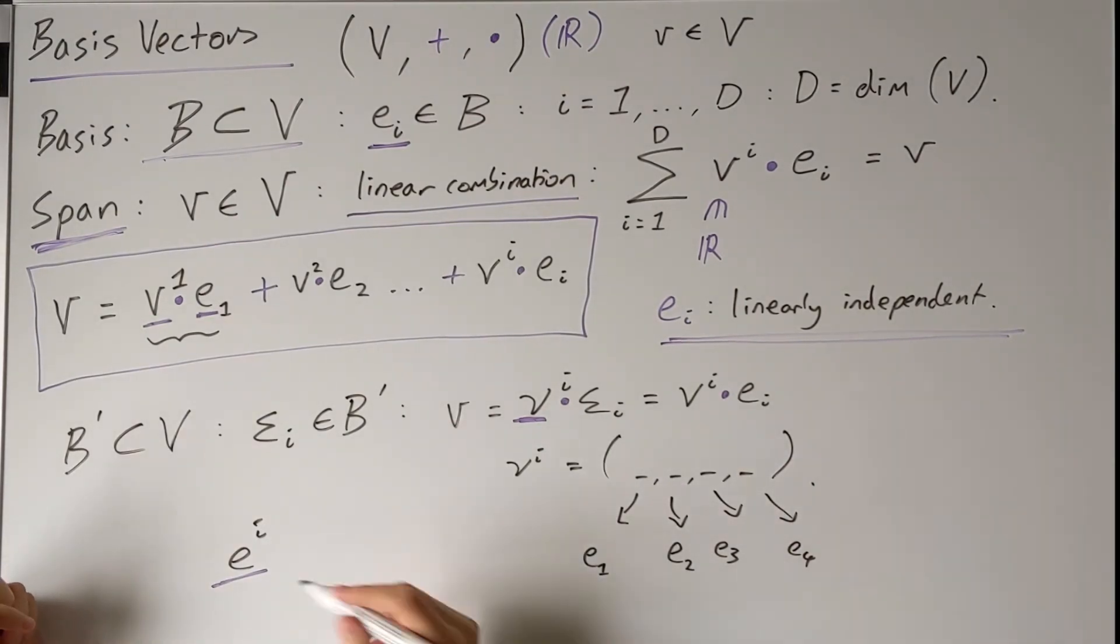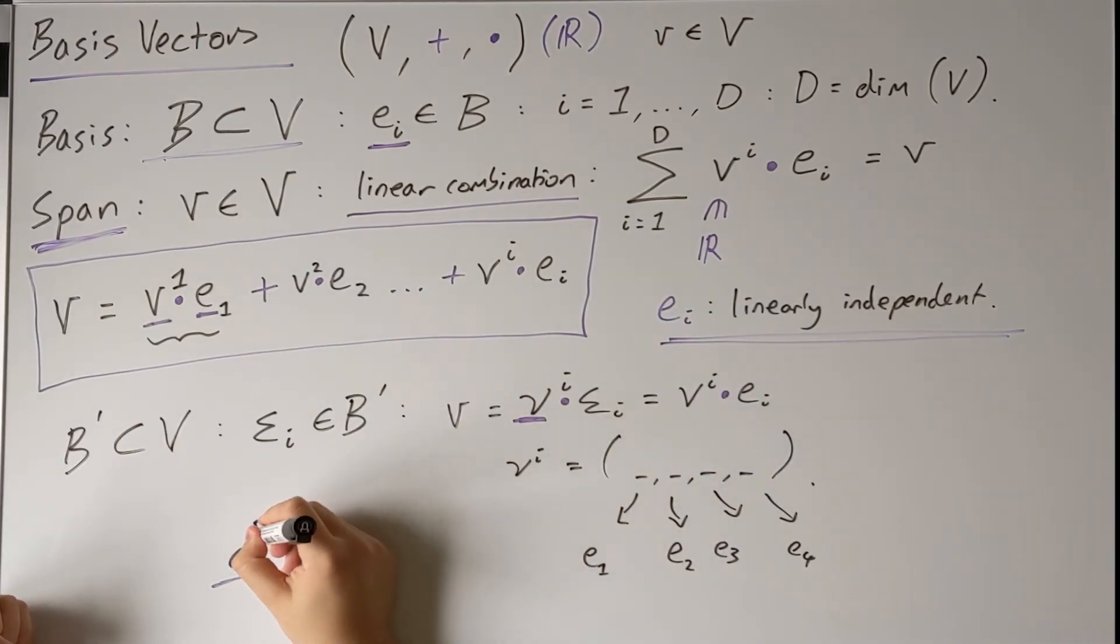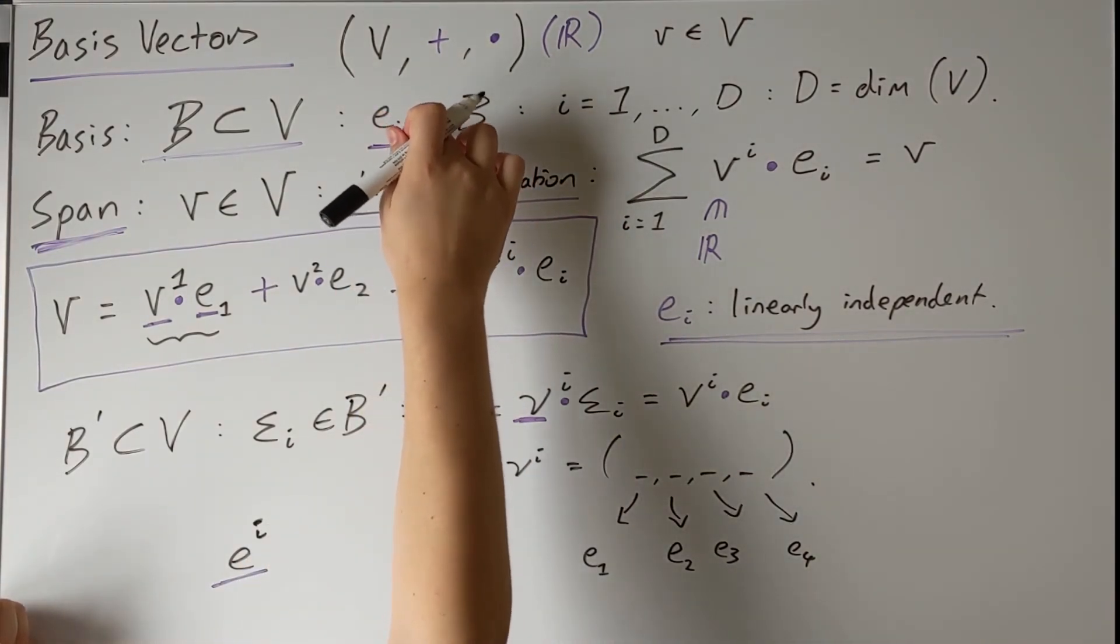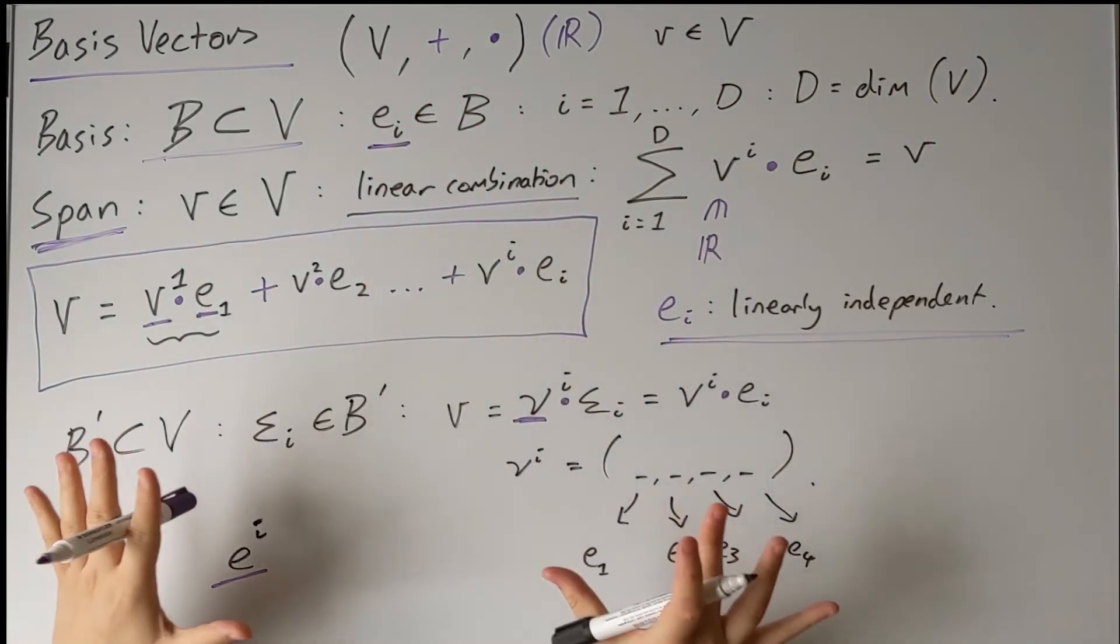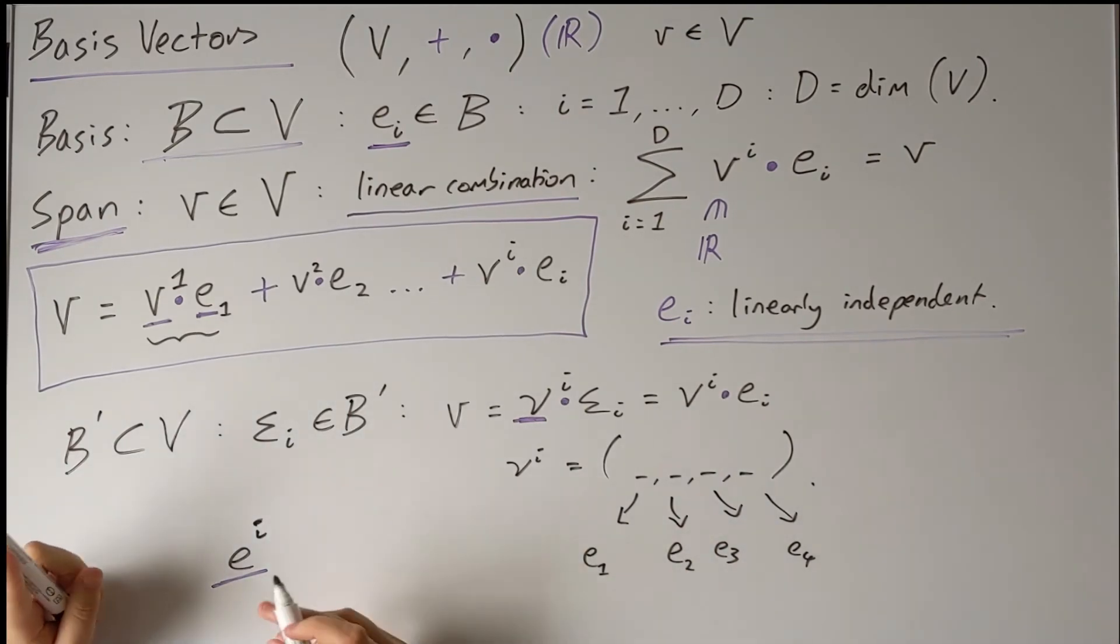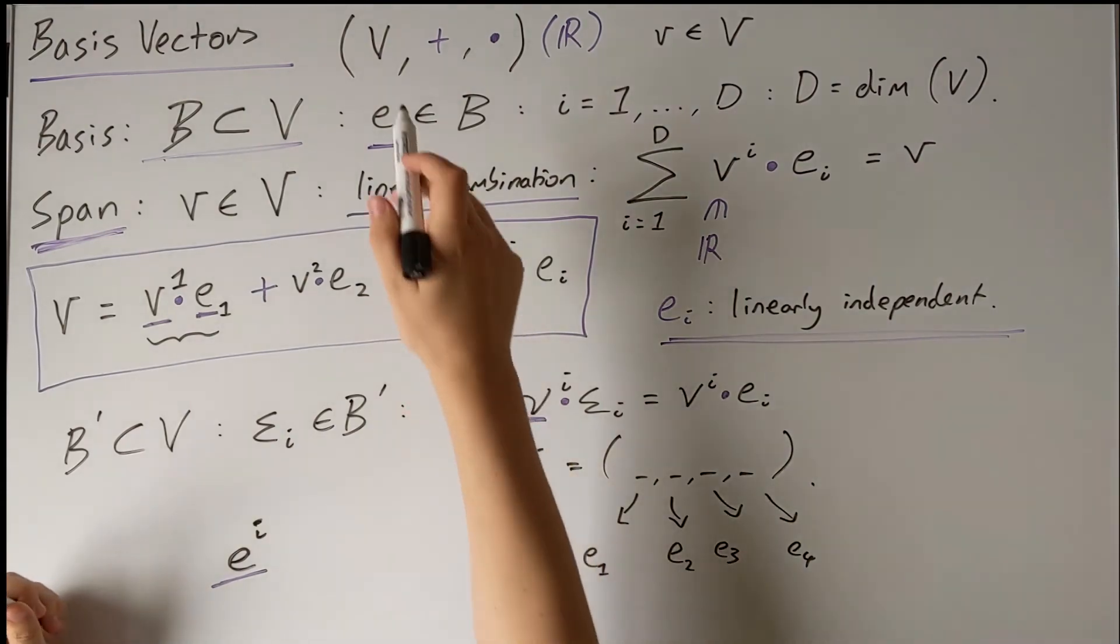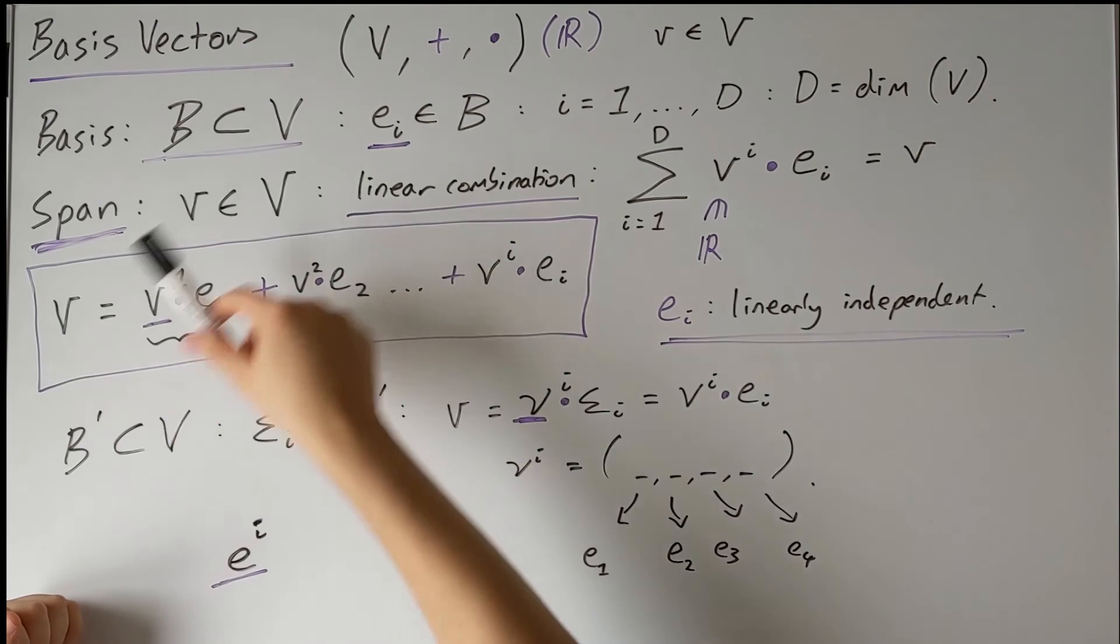when we introduce later on things called the something called the dual basis, we're going to have to use an upstairs index for the dual basis because we made the choice to use a subscript for the regular basis. This is purely a choice. We just need to be careful once we've made the choice to adhere to it. There's no meaning to the index placement, whether it's up or down, other than the fact that we made the choice here to start with it being down when we define the basis.